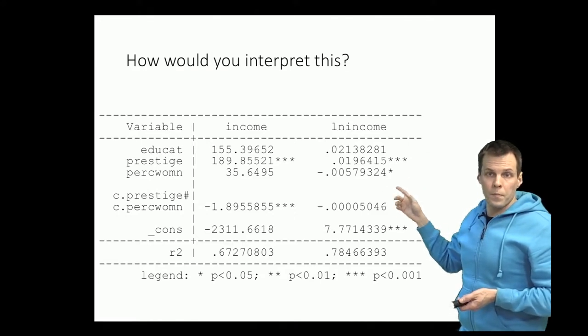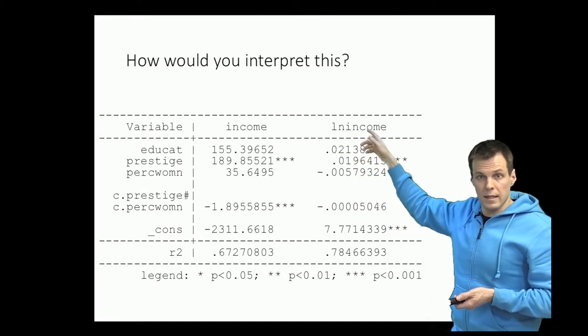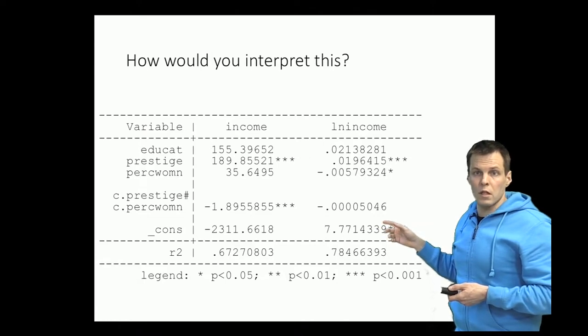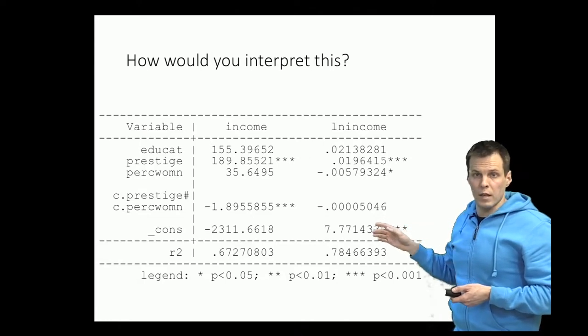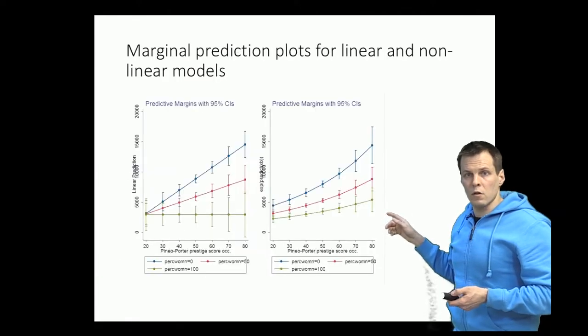The log transformation here complicates things a bit but not by much. Instead of calculating the predictions directly, we calculate predictions using the exact same procedure and then we just take exponential of those predictions. So instead of predicting lines, we predict a line and then we take an exponential of that line.